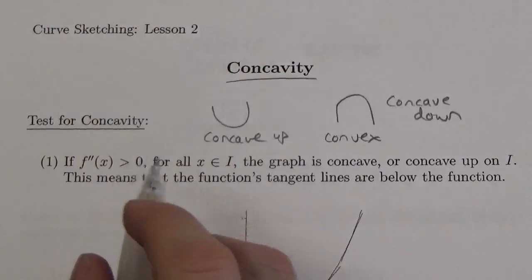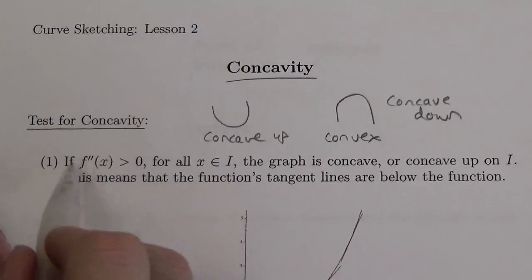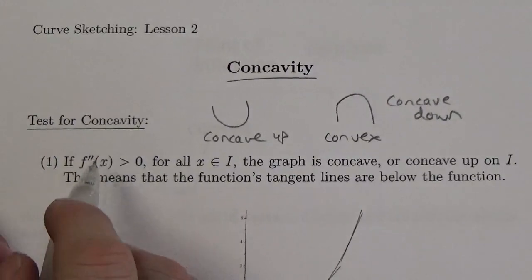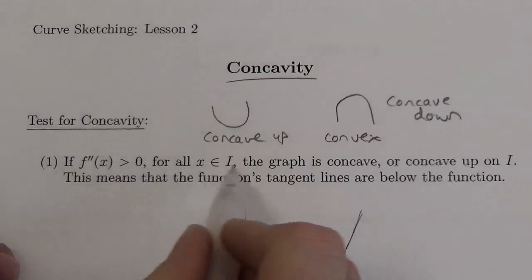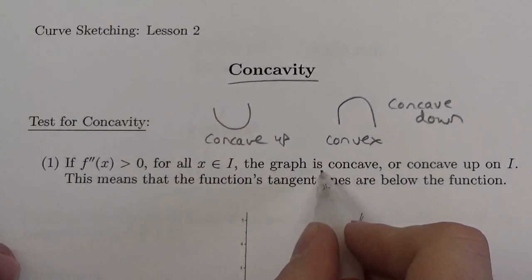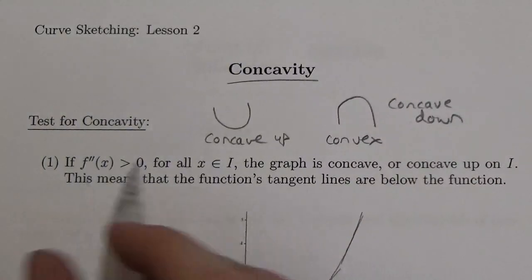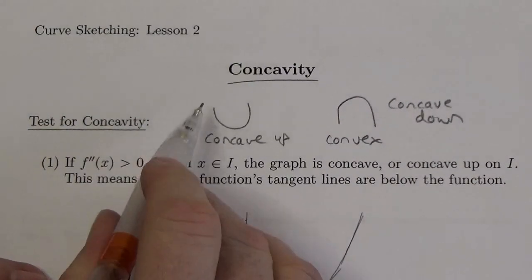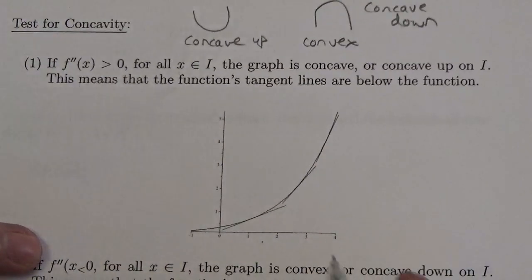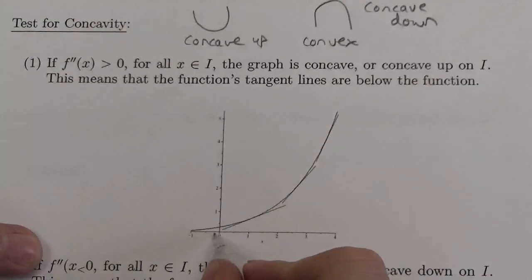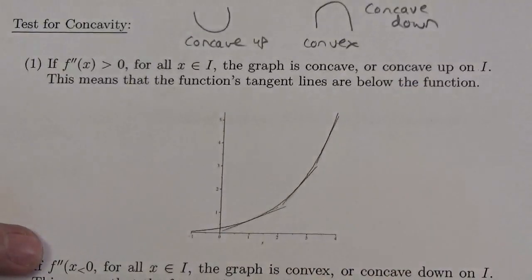Test for concavity — this deals with the second derivative. In an interval where the second derivative is greater than zero, the graph is going to be concave up on that interval. What that means is all of its tangent lines are below the function. If you've got a function that goes up like this, the tangent line is always below the function.